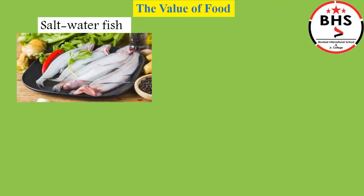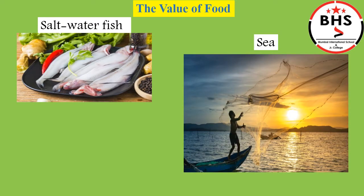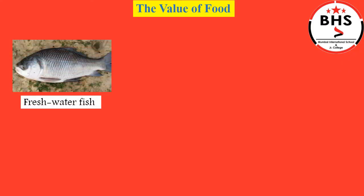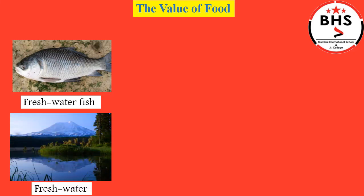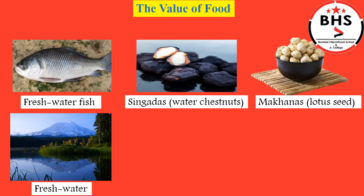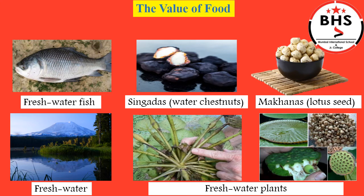We get salt water fish from the sea. Fishermen work hard to catch them. We also get salt from the sea. When the salty seawater is dried up, what we get is salt. It is then processed in factories and sold in the market. We get freshwater fish from freshwater of lakes and ponds. Fishermen work hard here too. Singadas, water chestnuts, and makhanas, lotus seeds, are not very common — we get them from freshwater plants.